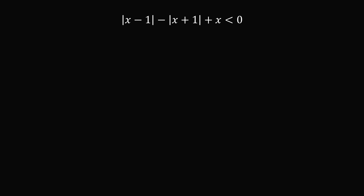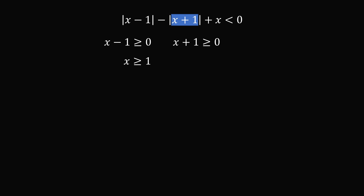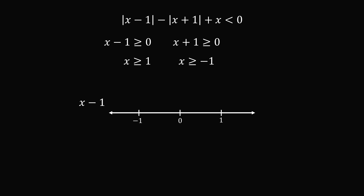To solve this problem, we need to look at what's inside of the absolute value signs. We need to know when x minus 1 is greater than or equal to 0 — this is when x is greater than or equal to 1. We also need to know when x plus 1 is greater than or equal to 0, and that is when x is greater than or equal to negative 1. So now we need to look at both of these together. On a number line, 1 and negative 1 are critical values. For x minus 1, it'll be positive when x is greater than or equal to 1, and otherwise negative. For x plus 1, it's positive until x equals negative 1, then negative. So we have three different cases to consider.